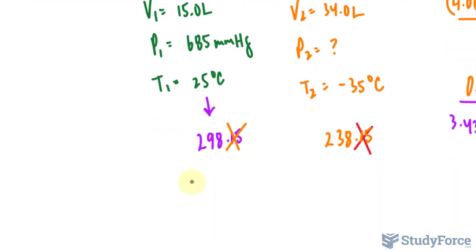Now we use the relationship PV over T is equal to PV over T where this is the original values and these are the final values.